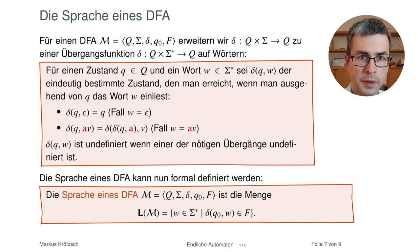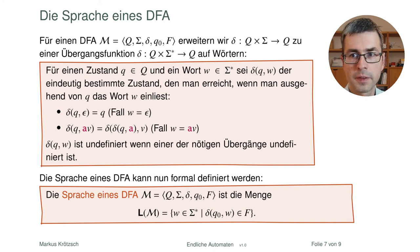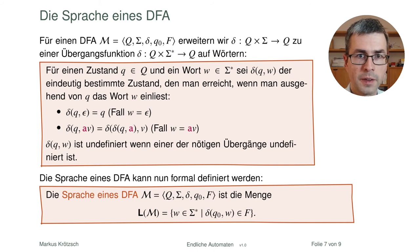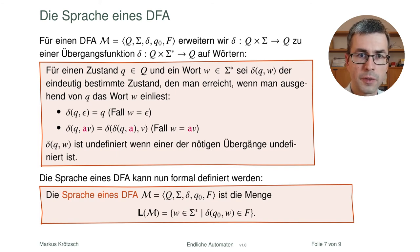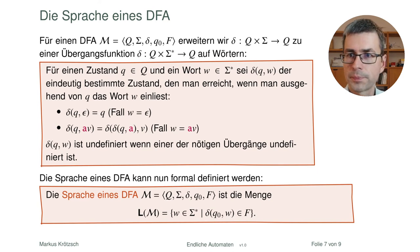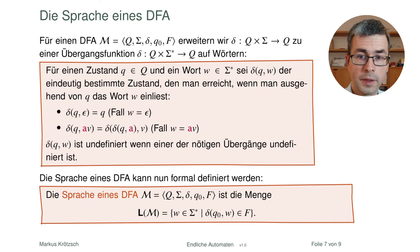Auch Mathematiker arbeiten viel mit Intuitionen, wenn sie etwas Neues entwickeln oder einen Beweis aufstellen. Gleichzeitig braucht man die Formalität, um sicherzugehen, dass man keine Fehler macht, und um mit anderen zu kommunizieren — denn die Intuition ist meistens etwas schwammig und lässt sich schwer eindeutig übertragen.